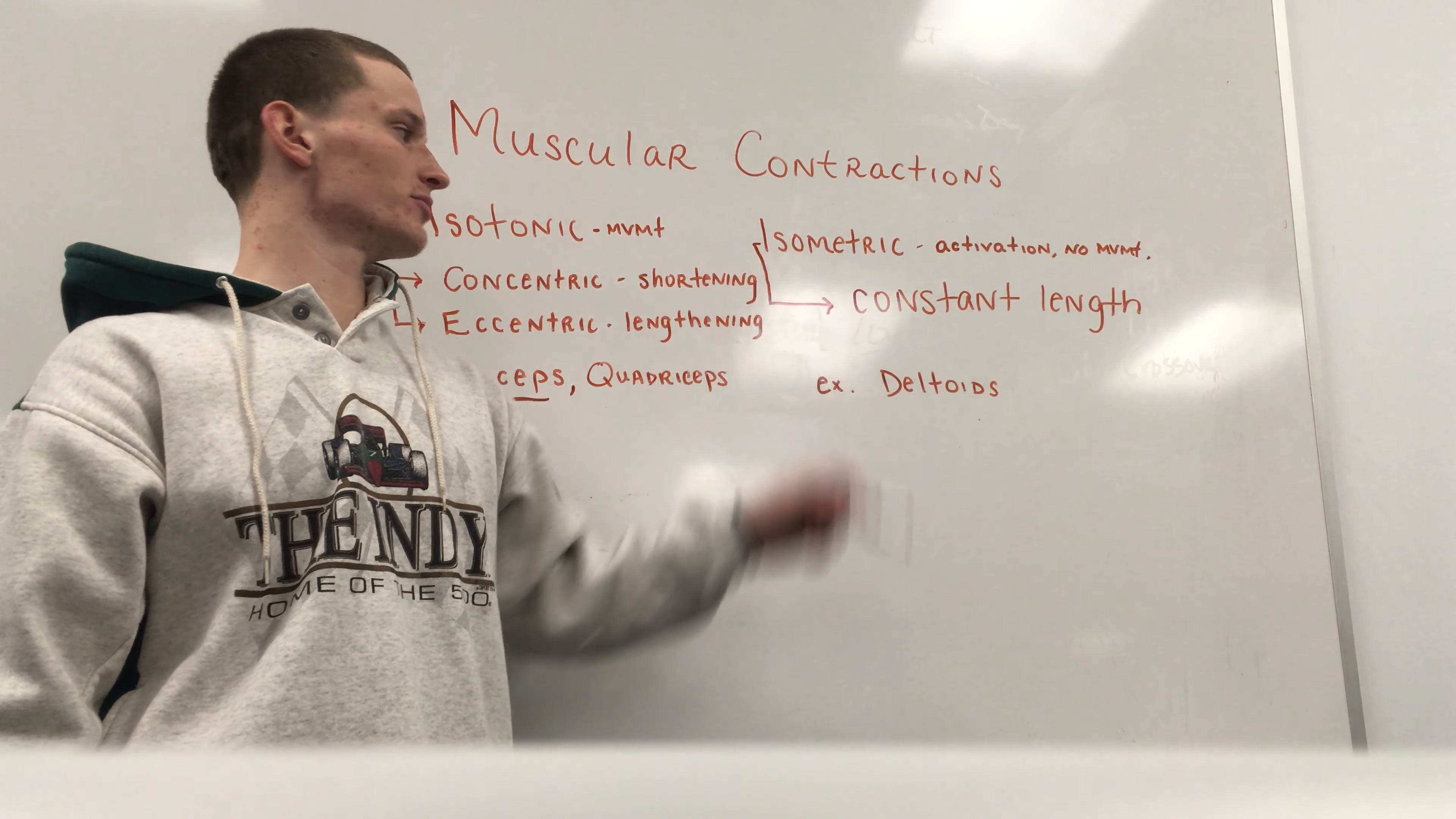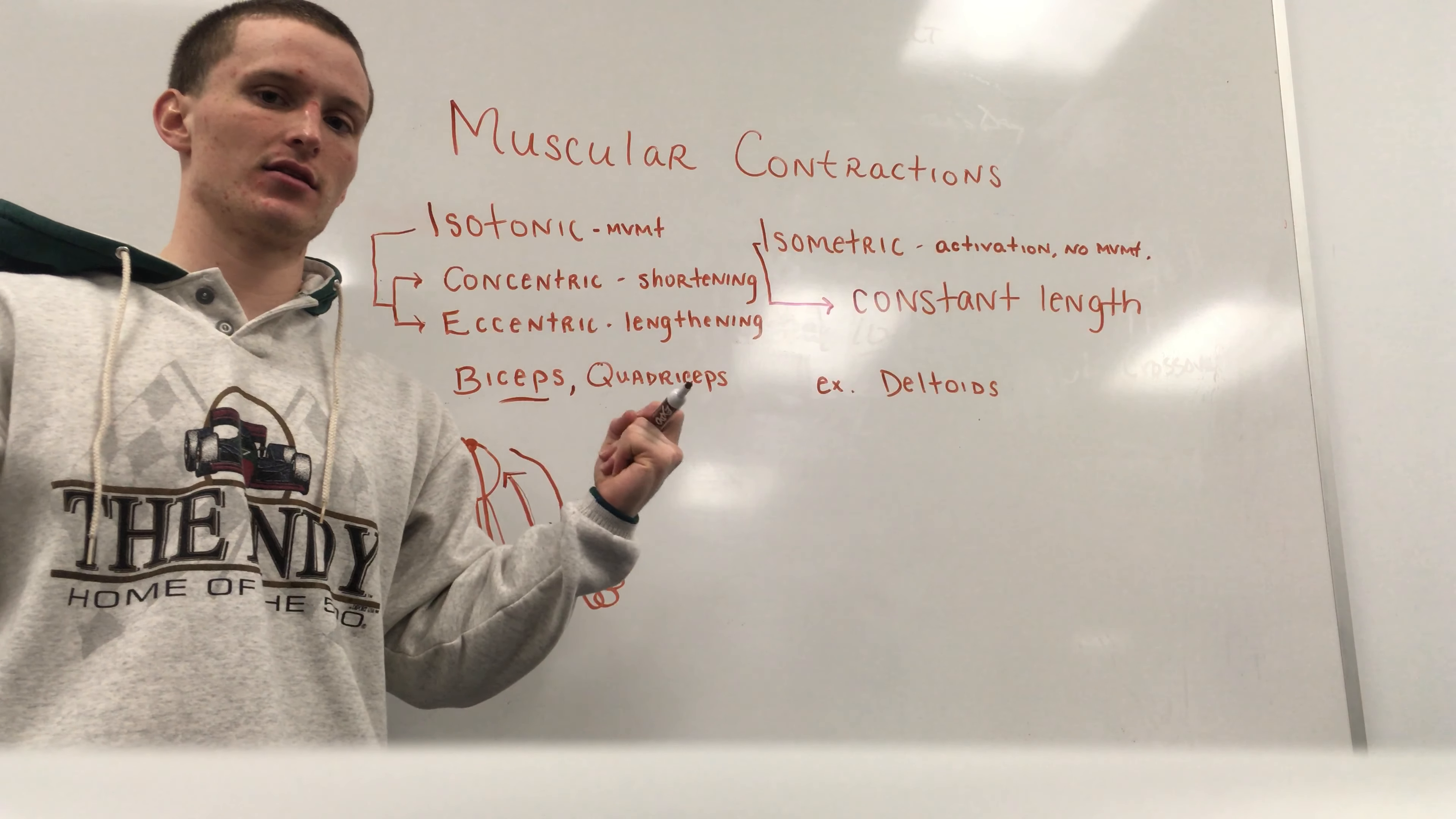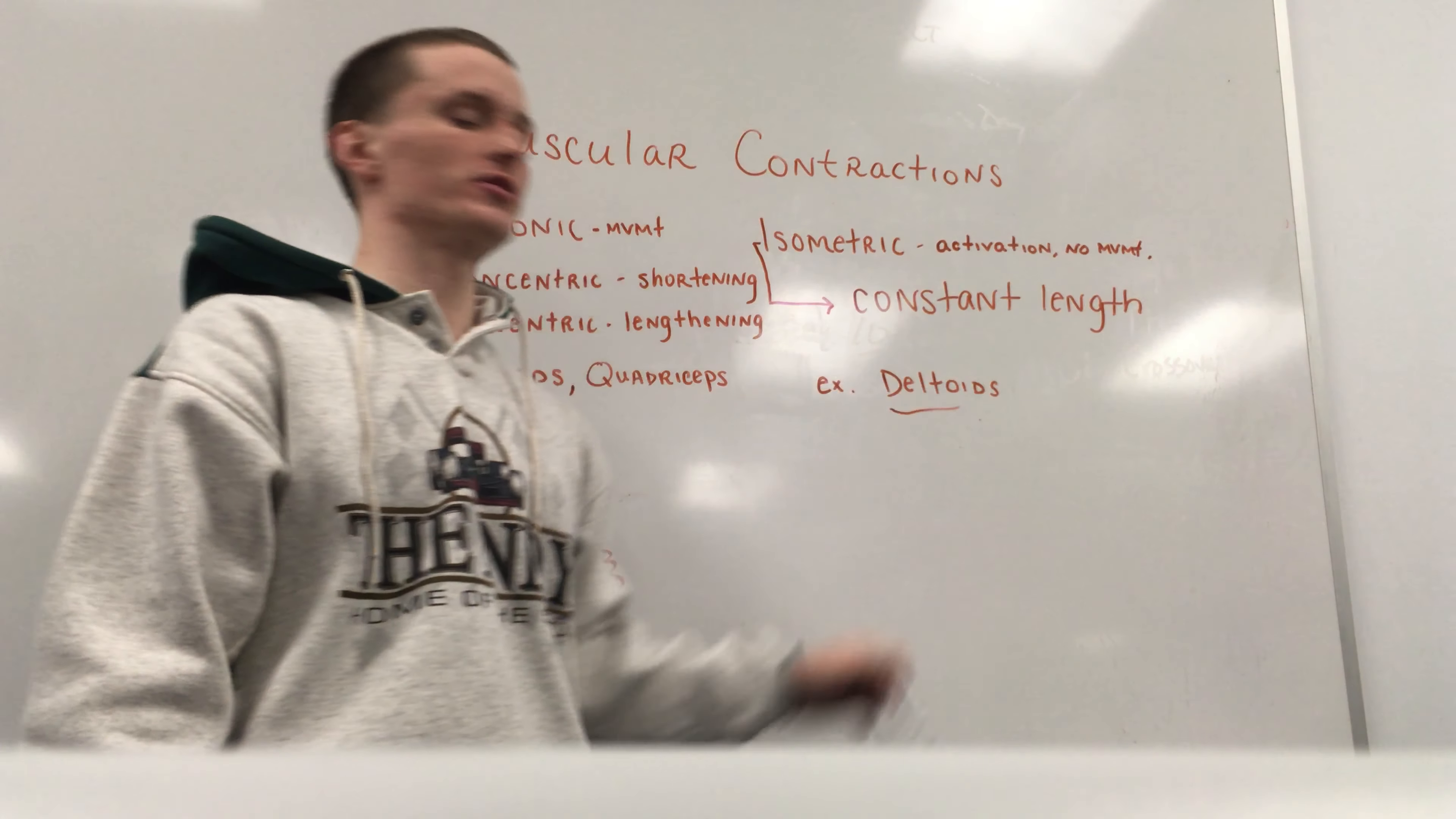So now we get on to isometrics. Again, constant length, you are not moving. An example with this would be the deltoids.